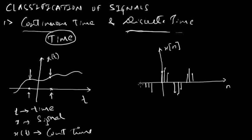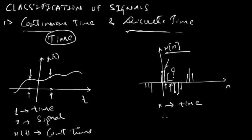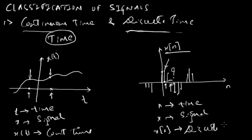Signals of this type are called discrete time signals. If you want to know the value of x of n at a defined value of n, it exists. But if you want to know the value of x of n at a value that is not defined, it does not exist — and hence it is called a discrete time signal. Here, n represents time, x is our signal, and x of n is our discrete time signal.